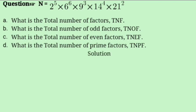Let us look at another question. We are given 2 raised to 5 times 6 raised to 6 times 9 raised to 3 times 14 raised to 4 times 21 raised to 2. We need to find the total number of factors (TNF), total number of odd factors (TNOF), total number of even factors (TNEF), and total number of prime factors (TNPF).